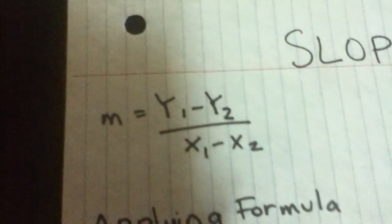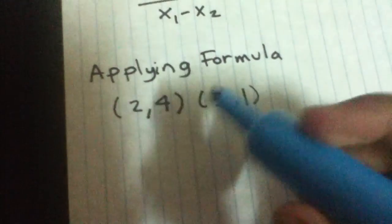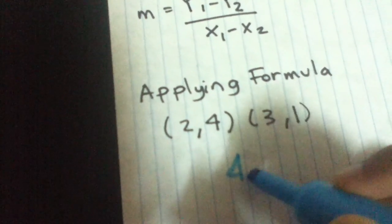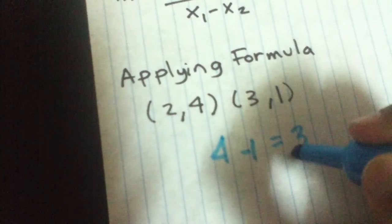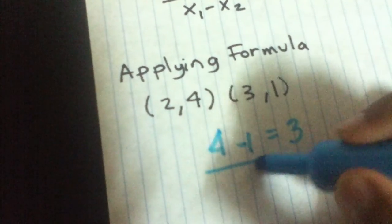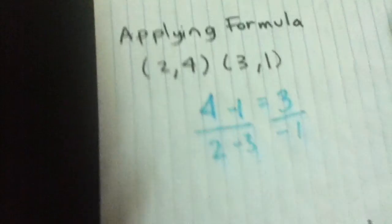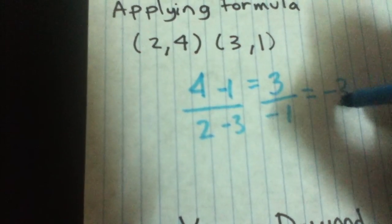And m stands for slope. So applying the formula right here, we can do 4 minus 1 equals 3 over 2 minus 3 equals negative 1. So our slope would be negative 3.